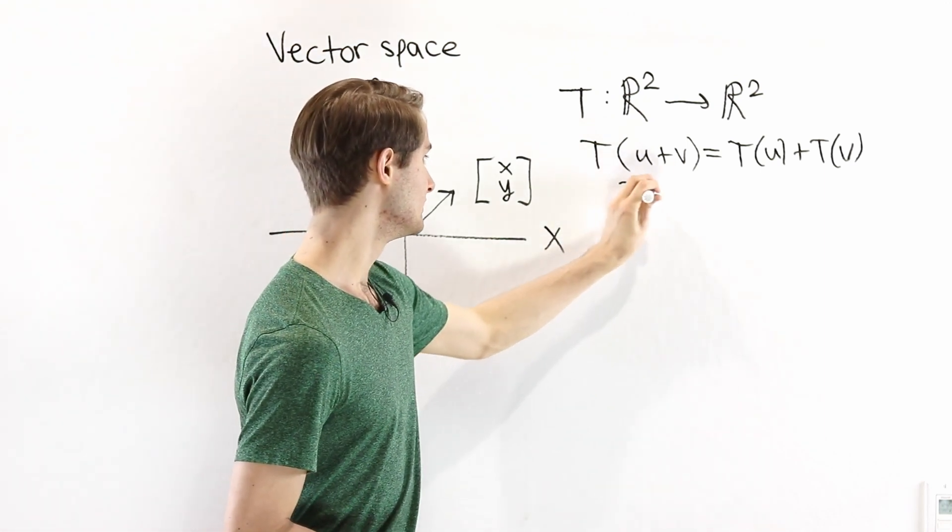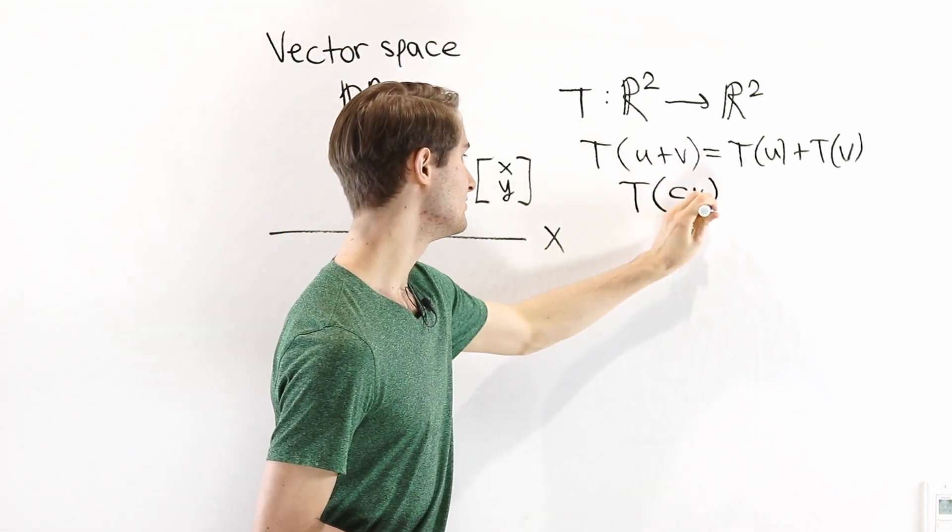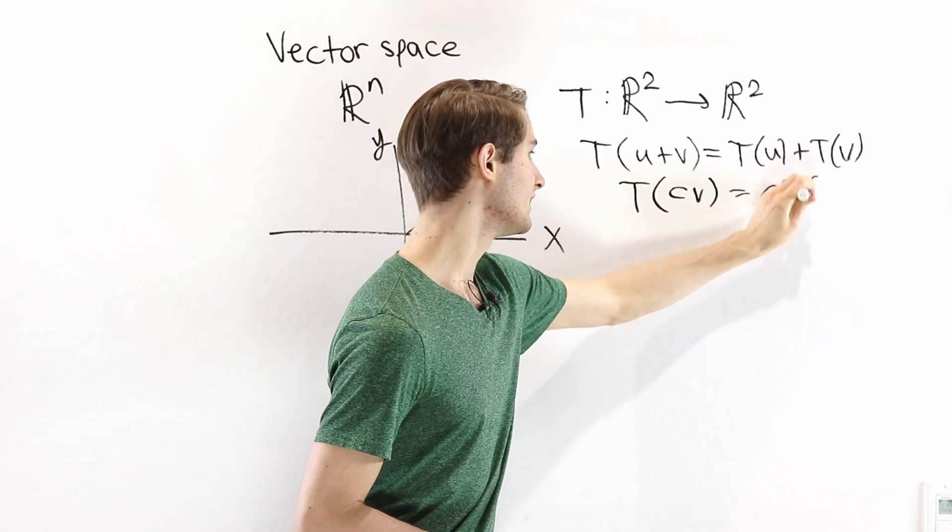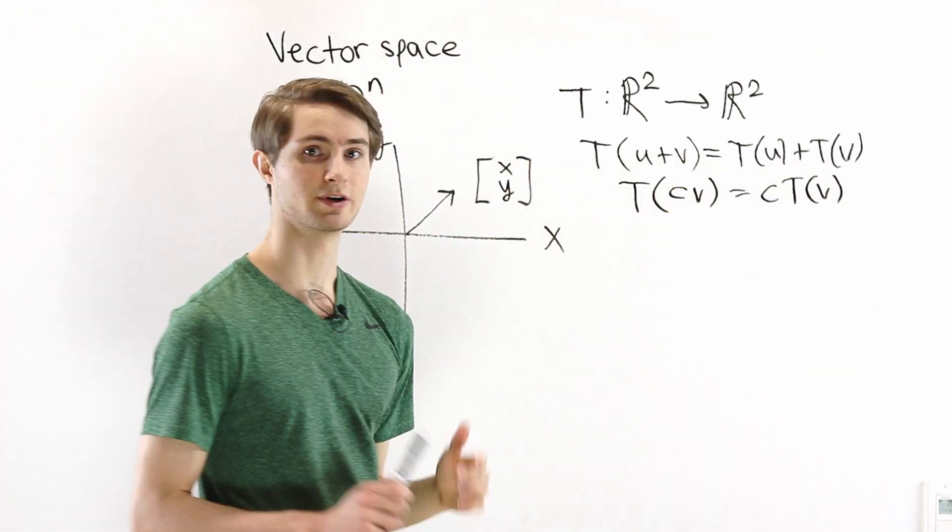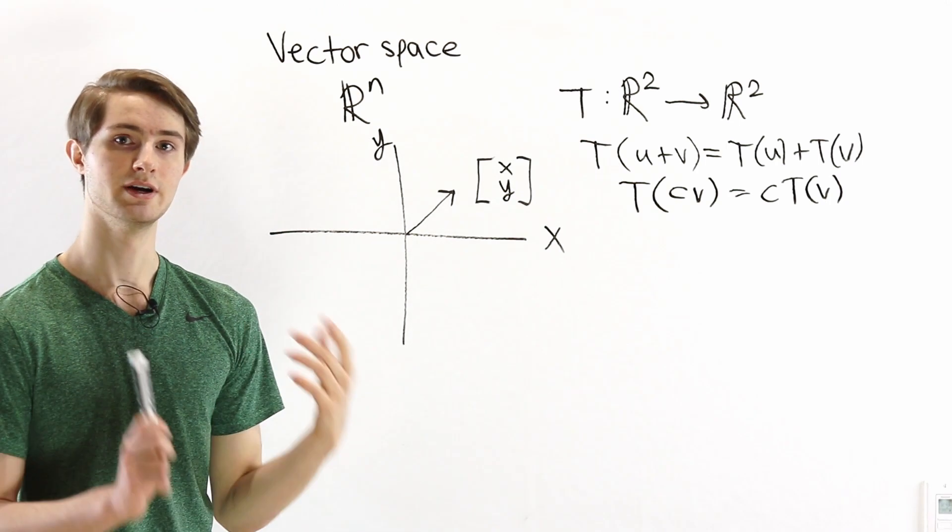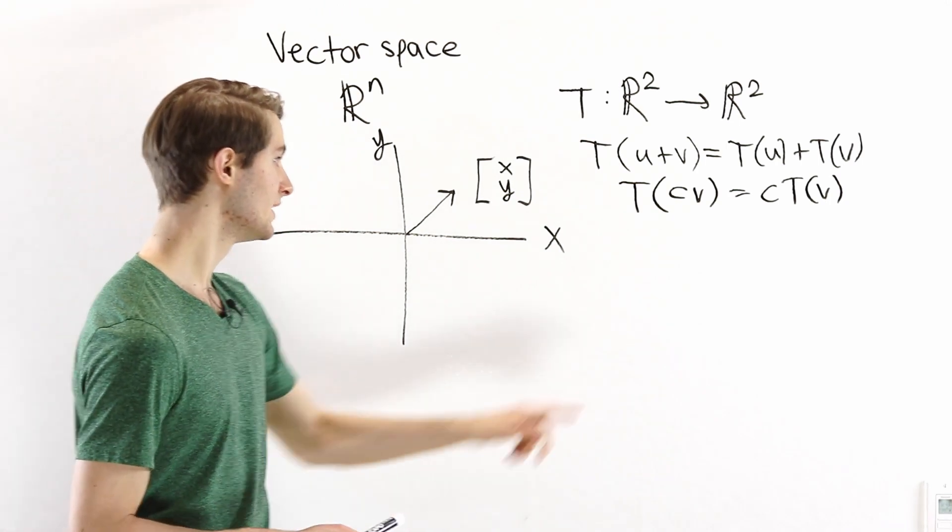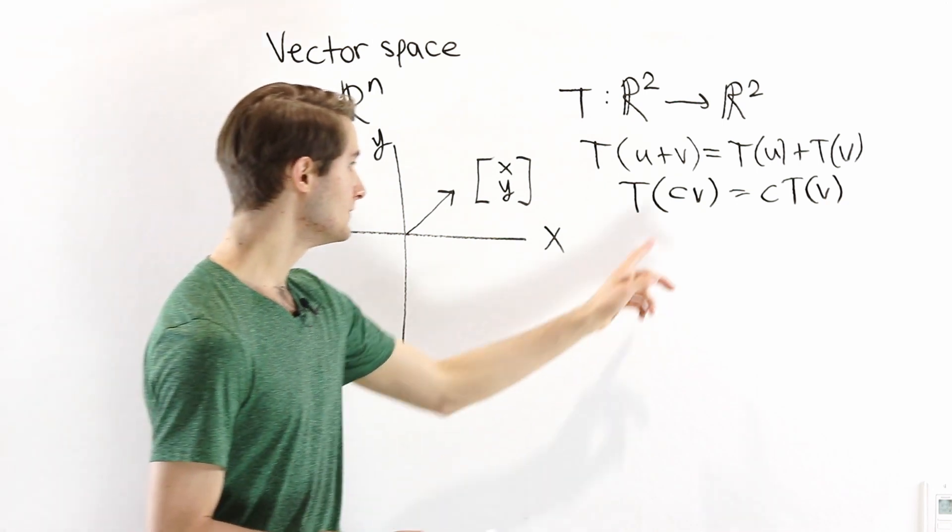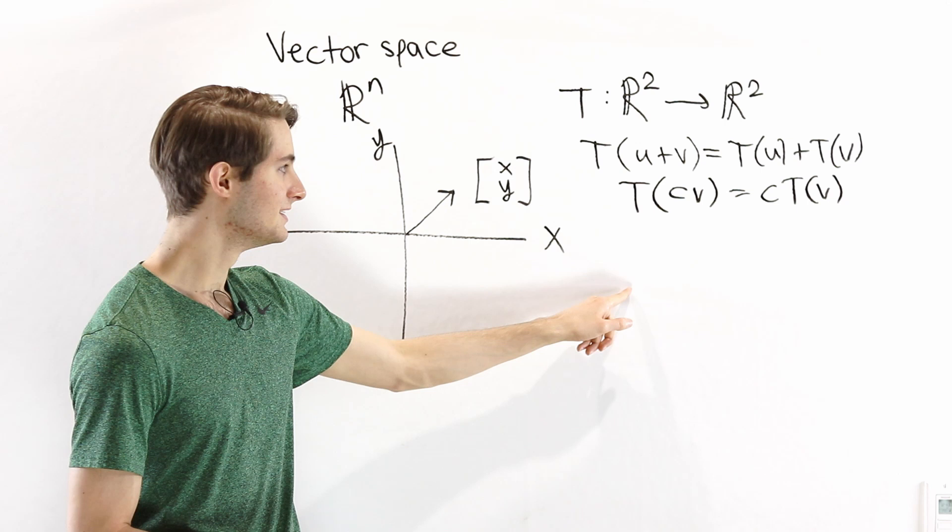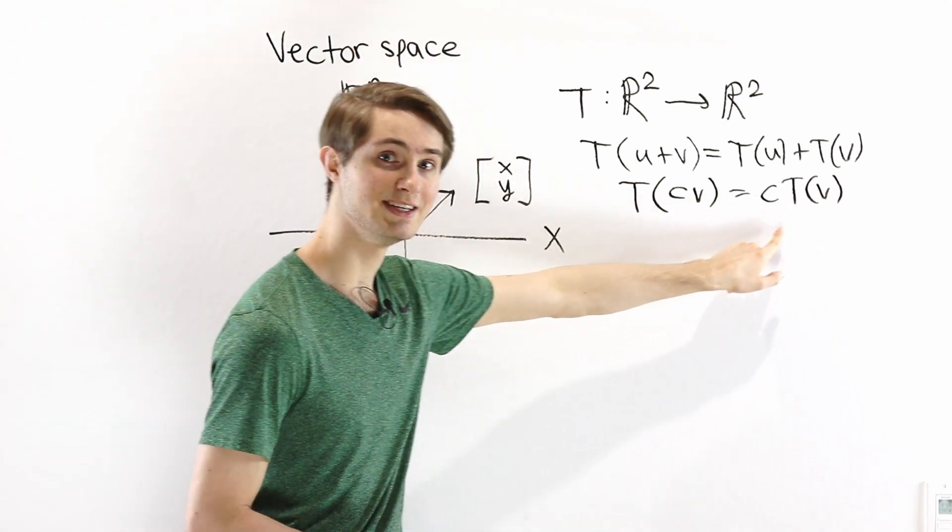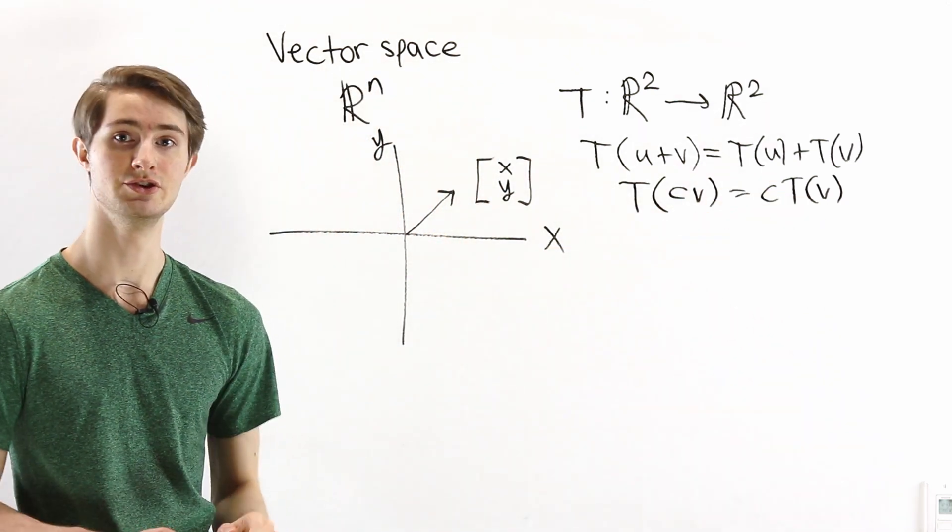The other condition is that T of c times v is equal to c times T of v. In this case, c is some constant like 3 or negative 2.6 and v is our vector. So if we multiply a constant onto a vector and then apply T, that's the same thing as applying T and then multiplying the constant to the new result.